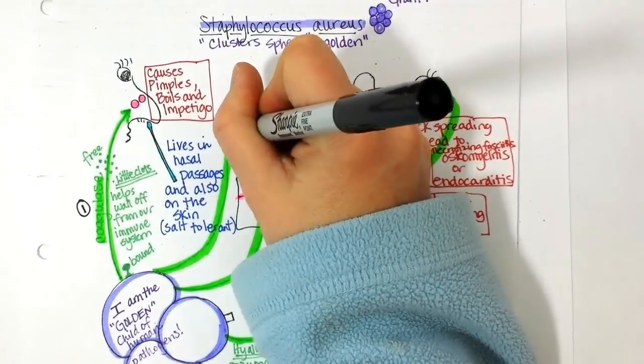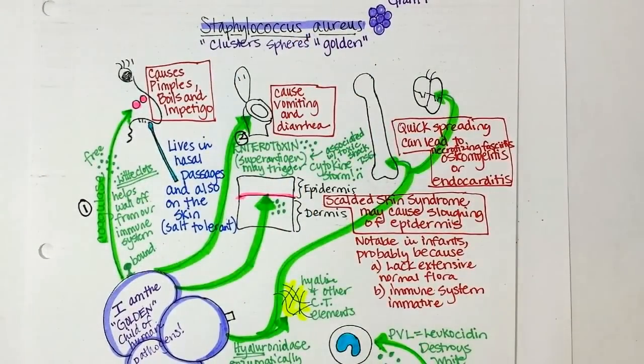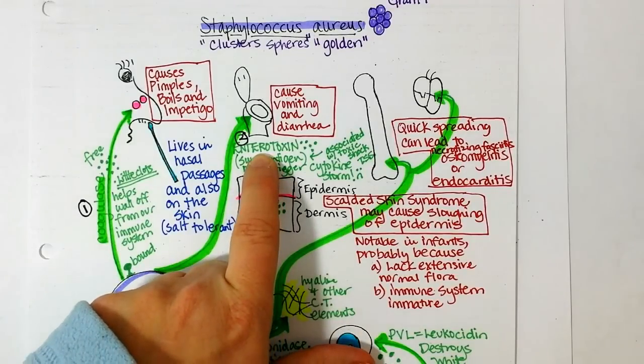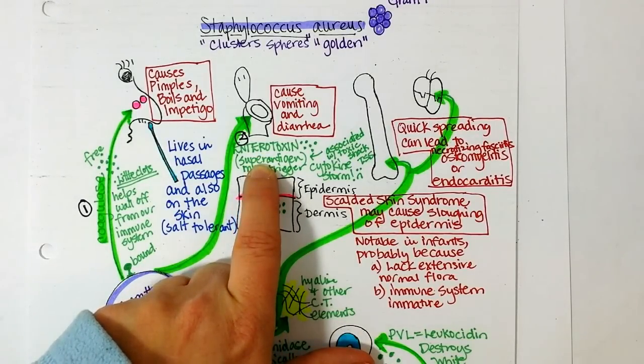Then we talked about its enterotoxin. Which can cause foodborne illness if it's on contaminated foods. It's usually like a 24-hour bug that people can get over pretty quickly. But in immunocompromised people, if the enterotoxin damages the intestines enough and gets into the blood, then it can trigger a cytokine storm.